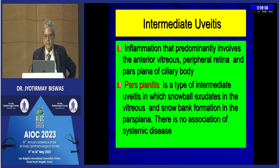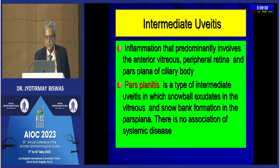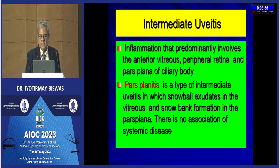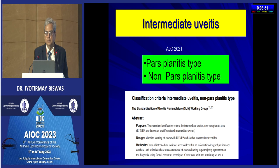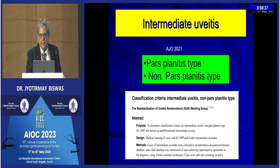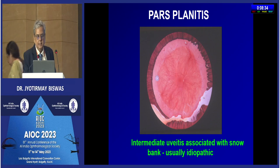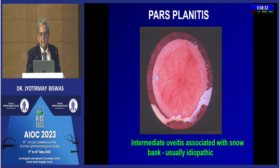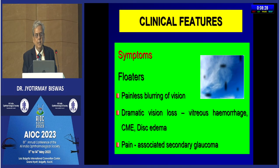There are two terms: pars planitis and intermediate uveitis. Pars planitis is the subtype of intermediate uveitis which has snowball exudates in the vitreous and snowbank formation in the pars plana. There is no association of systemic disease in that case. Per the SUN classification, intermediate uveitis has two subtypes: pars planitis type, and non-pars planitis type where you get vitreous cells and flare only. In pars planitis you get pars plana exudates and snowbanking. This typical pars planitis associated with snowbanking is usually idiopathic.